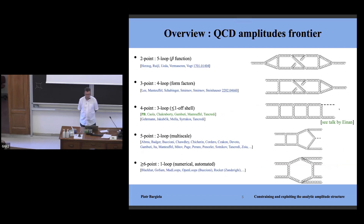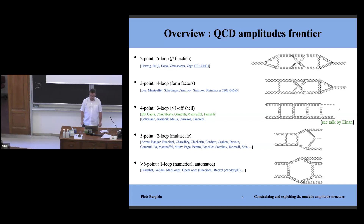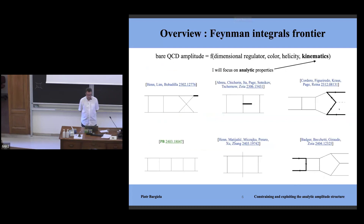An overview of what's possible in QCD with massless internal propagators and possibly massive external legs: at five loops, the two-point beta function is available; at four loops, it's a three-point function; at three loops, there are fully massless kinematics and work toward including one off-shell particle. At two loops, there are many efforts to compute five-point amplitudes with multiple scales, and at one loop, everything is understood algorithmically — packages exist where you press a button and get a numerical answer.